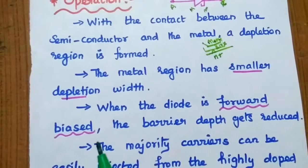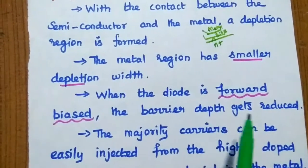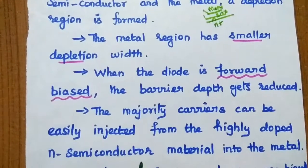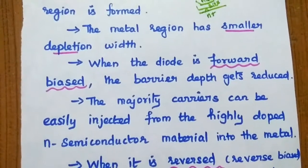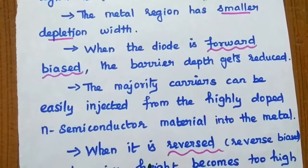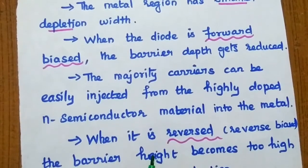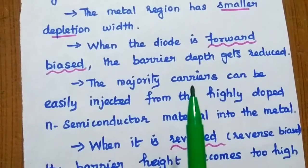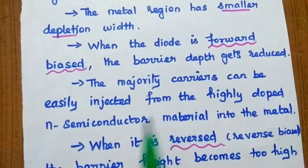When the diode is forward biased, the barrier depth gets reduced. In turn, the majority carriers can be easily injected from the highly doped N semiconductor material into the metal. So the diode starts conducting. It is in the on condition.